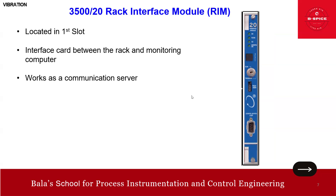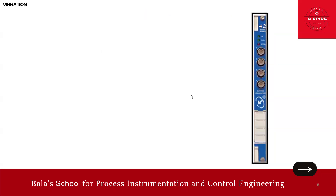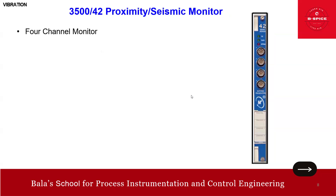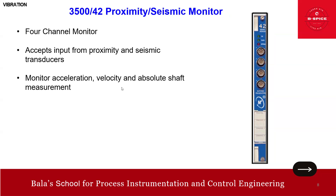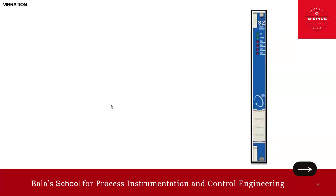Module 42 is the proximity/seismic monitor. It is a four-channel monitor that accepts inputs from proximity and seismic transducers in the field. It monitors acceleration, velocity, and absolute shaft measurement.